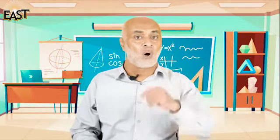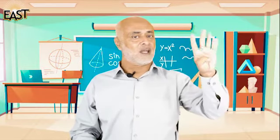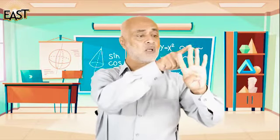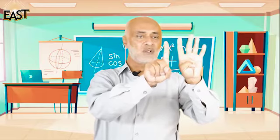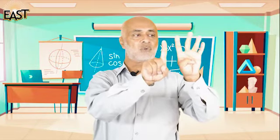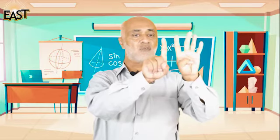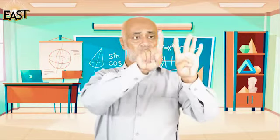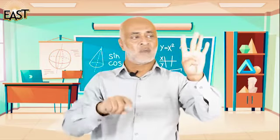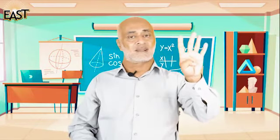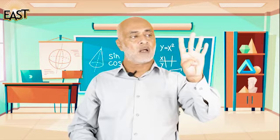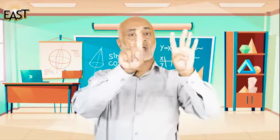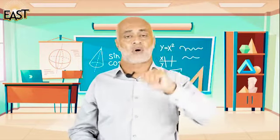If you like it then we can do one more. Are you ready? How many fingers we have now? Let's count — one, two, three, four, and five. We have five fingers. Let's take away one finger. Now how many we have left? Let's count — one, two, three, and four. So five take away one is four.